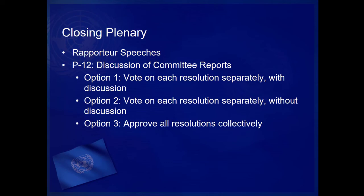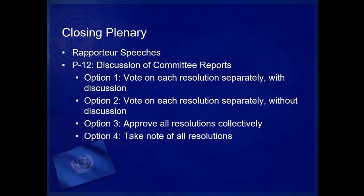Because the resolutions have already been approved by committee, there is usually little drama or controversy over their passage by the General Assembly at the end of conference. Finally, Option 4 permits the General Assembly to take note of the committee's report without taking direct action on the resolutions themselves. This motion requires two speakers in favor and two against, and requires a two-thirds majority to pass. If the motion passes, the General Assembly takes note of the committee's report without taking action on it. Note that for committees that do not report to the General Assembly — for example, the Security Council or ECOSOC — only Option 4 is the appropriate course of action for the General Assembly.